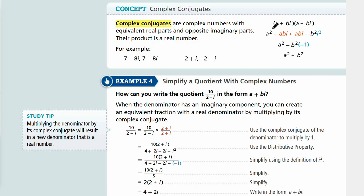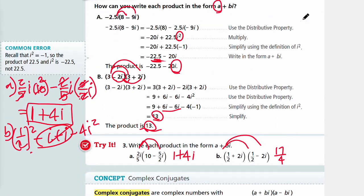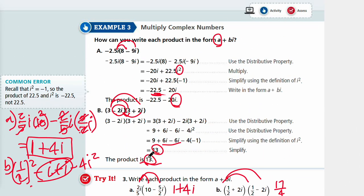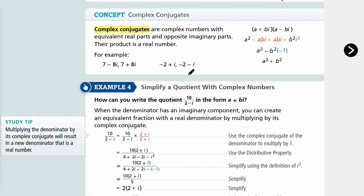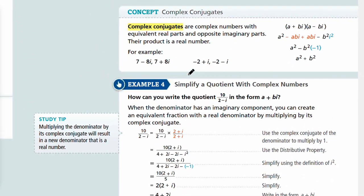We looked at complex numbers in the last examples. Now we have complex conjugates where the complex numbers are binomials that multiply to get a real number. In the previous example, we looked at some cases where the product is a real number when multiplying complex numbers.